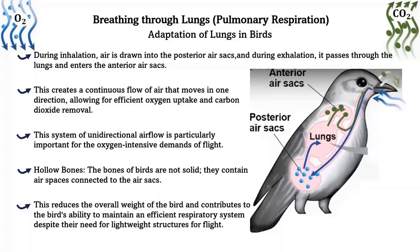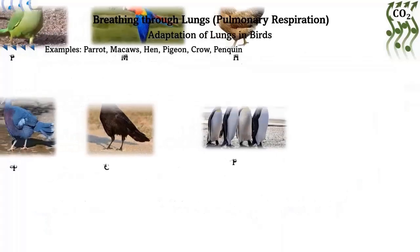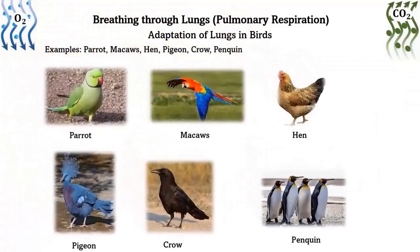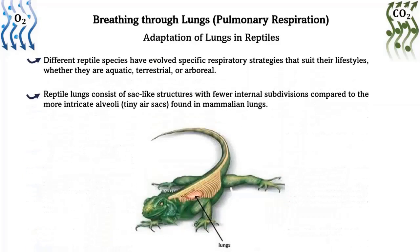This system of unidirectional airflow is particularly important for the oxygen-intensive demands of flight. The bones of birds are not solid — they contain air spaces connected to the air sacs. This reduces the overall weight of the bird and contributes to the bird's ability to maintain an efficient respiratory system despite their need for lightweight structures. Examples: parrots, macaws, hens, pigeons, crows, and penguins.